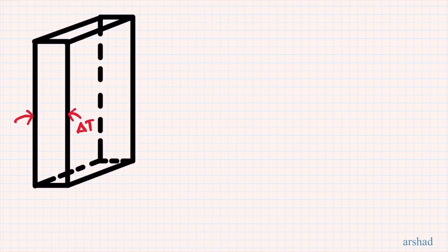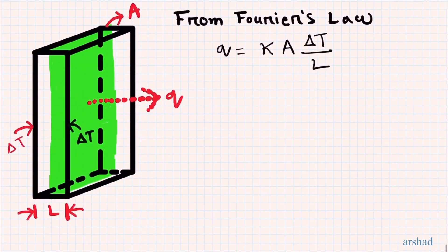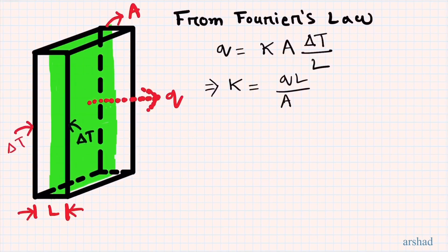Now let's take a plane wall. The temperature difference across the wall is Delta T, the thickness is L, the amount of heat being transferred is Q, and the cross-sectional area is A. From Fourier's law we can say Q equals K times A times Delta T over L, and therefore K equals Q times L over A times Delta T.